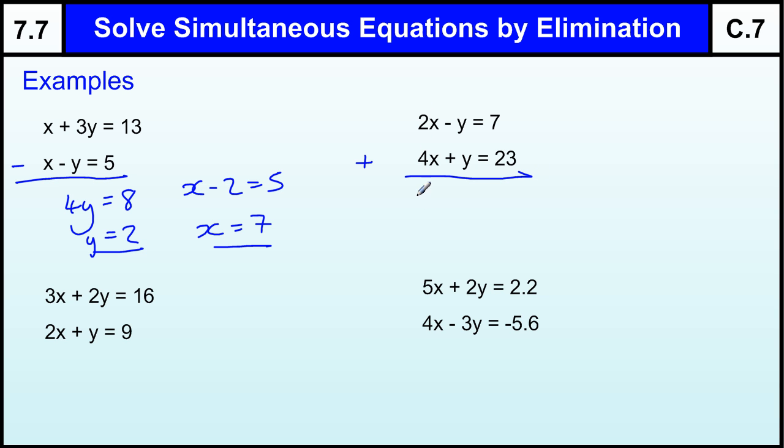Because if we add those two equations, we add the X's to the X's, so that is 6X. And we add the minus Y to the plus Y, the Y disappears because minus Y plus Y is nothing. And 7 plus 23 is 30. So we have 6X equals 30, so X equals 5.